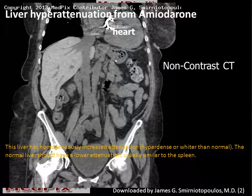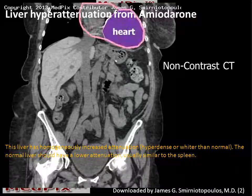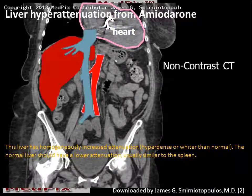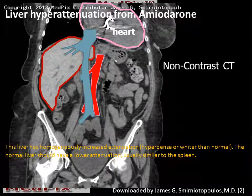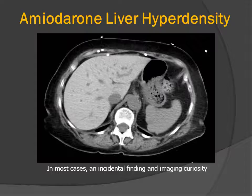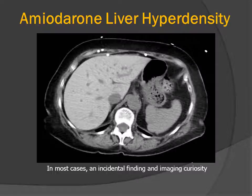This coronal reformation from the same patient demonstrates the heart, the abdominal aorta, the inferior vena cava, and the liver, which is remarkably hyperattenuating in comparison to the adjacent structures. So this was a patient with amiodarone liver hyperdensity or hyperattenuation — not a toxic problem, but an unusual and incidental finding.